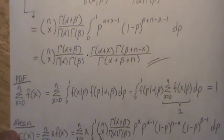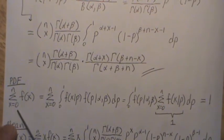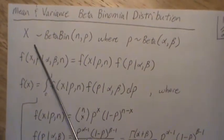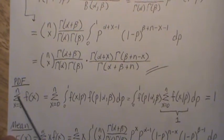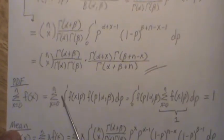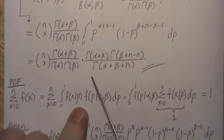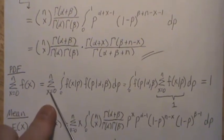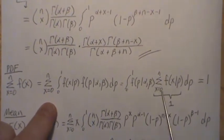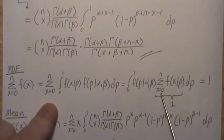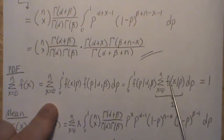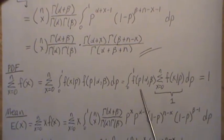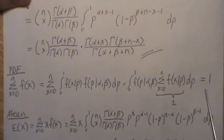Now, is this a PDF? For it to be a PDF it needs to sum to 1. Since X is a beta binomial, it ranges from 0 to N, so we sum from 0 to N. Substituting in the distribution and taking the summation inside, this piece — summing a binomial probability mass function — sums to 1 and goes away. We're then integrating a beta distribution over its support 0 to 1, which also equals 1. So it is a valid PDF.